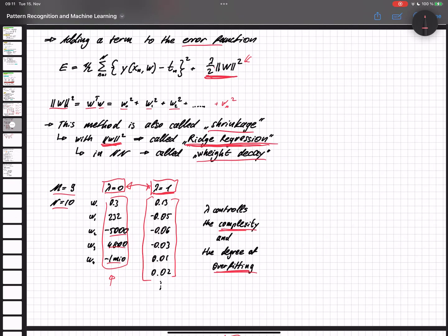If we look at the values of our parameters w, if we set lambda to zero, nothing changes. We're still in the regime of overfitting. And if we set it to one, we're setting almost all parameters to zero.